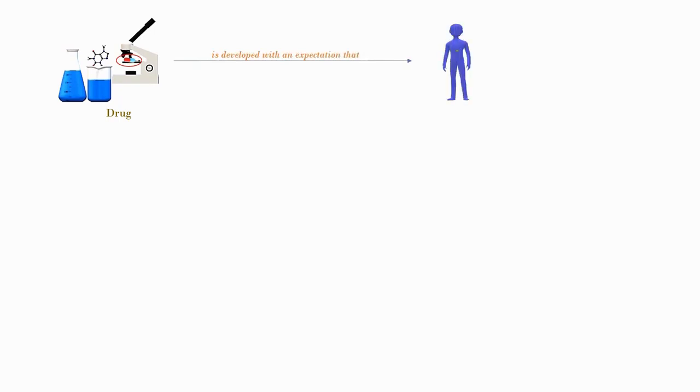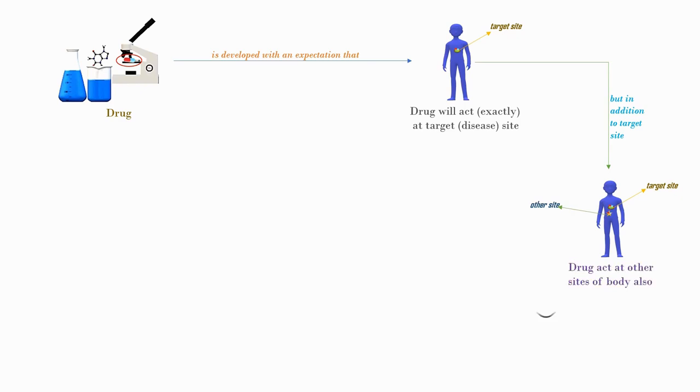Generally, when a drug is developed, it is expected to act specifically at the target site, that is the disease site, and not on any other site in the body system. However, it does not happen so. The pharmaceutical drug shows its influence on other sites of the body as well. Sometimes these influences are considered good, and at times these influences are irritating and bad.